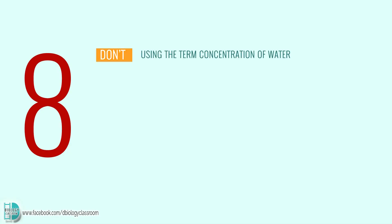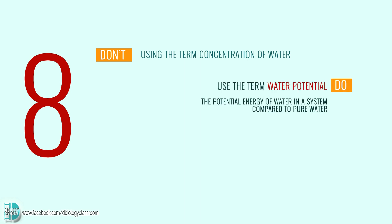Number 8: using the term 'concentration of water.' When describing osmosis, you must use the term 'water potential,' which is the potential energy of water in a system compared to pure water, and it quantifies the tendency of water to move from one area to another.